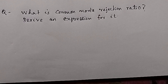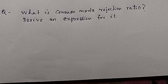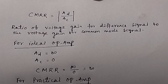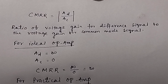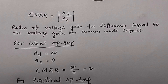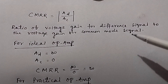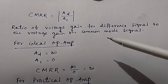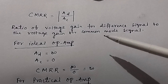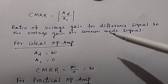What is common mode rejection ratio or CMRR? Derive an expression for it. Common mode rejection ratio is the ratio between the voltage gain for the difference signal and the voltage gain for the common mode signal.